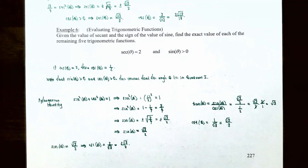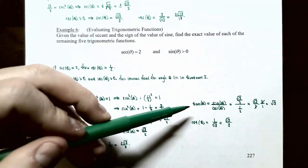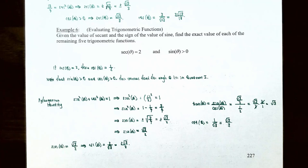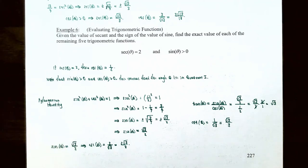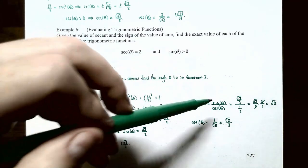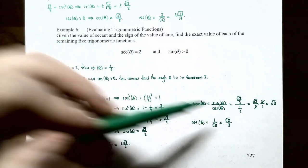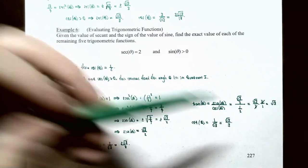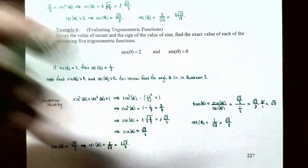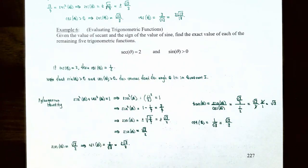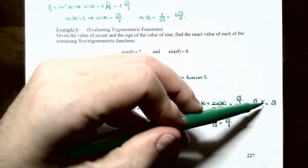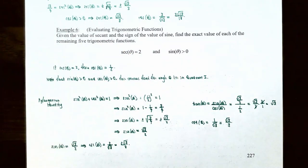Now we can find the tangent function. Tangent of theta equals sine of theta divided by cosine of theta. We found sine of theta equals square root 3 divided by 2, and cosine of theta equals one-half. So tangent of theta equals square root 3 divided by 2, divided by one-half. Multiplying by the reciprocal of the denominator gives square root 3 divided by 2 times 2 over 1. The 2s cancel, so tangent of theta equals square root 3.